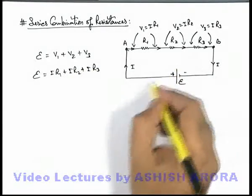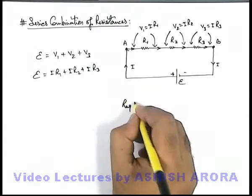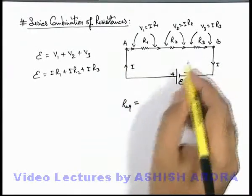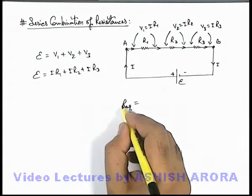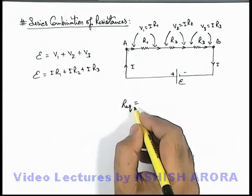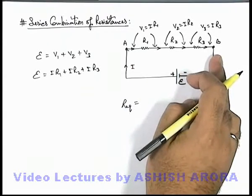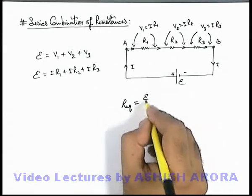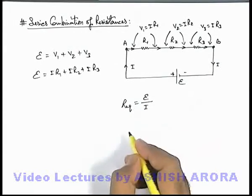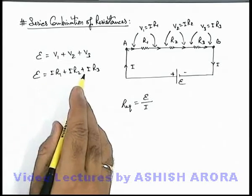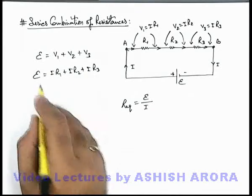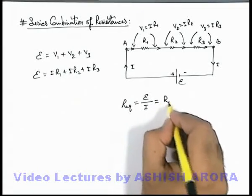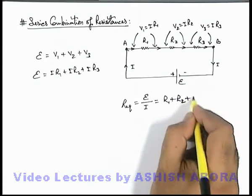And if we wish to find out the equivalent resistance of this combination of resistances, in the previous section we have studied that equivalent resistance is written as the potential difference applied across the combination divided by the current flowing through the combination, so here it'll be E upon i. And from this equation we can find out the value of E upon i which is equal to R1 plus R2 plus R3.